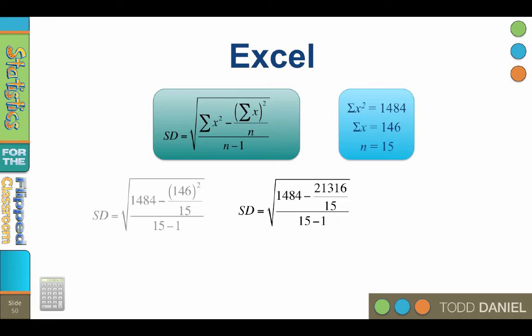Then we move to division. Still trying to clean up the numerator. 21,316 divided by 15 is 1421.06. Then we do subtraction. We might as well clean up the denominator. 15 minus 1 is 14.